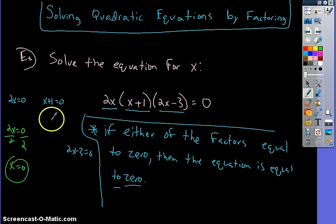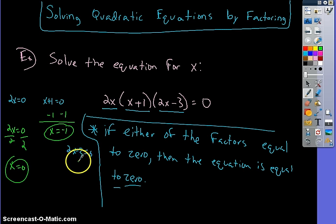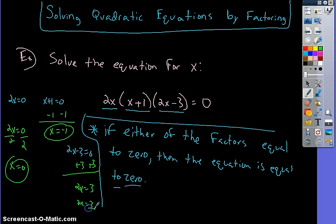For x+1 equals 0, I want to solve for x — subtract 1, so x equals negative 1. For 2x−3 equals 0, add 3 to get 2x equals 3, then divide by 2, so x equals 1.5, or 3/2. So if x is either one of those numbers, I should get 0.